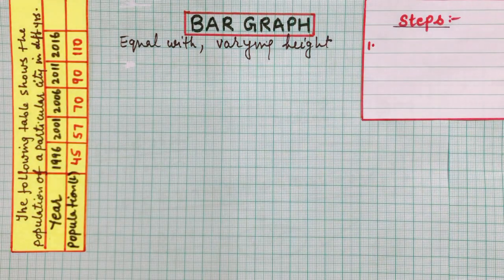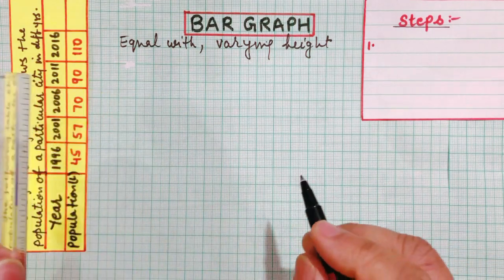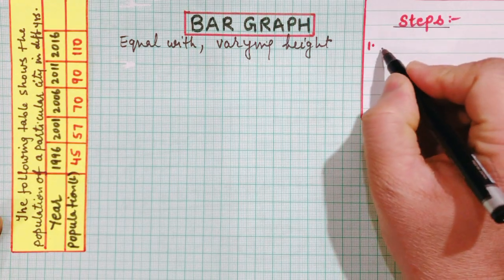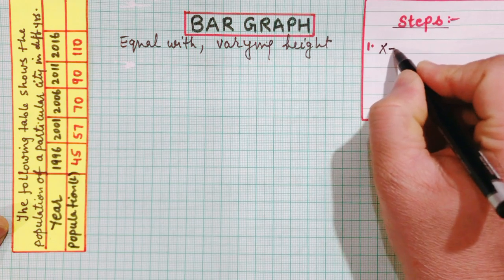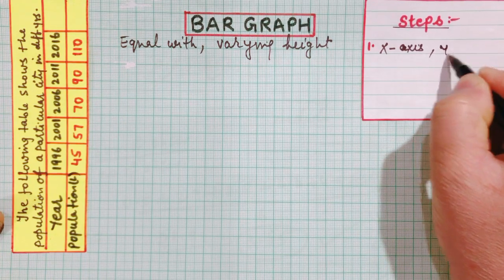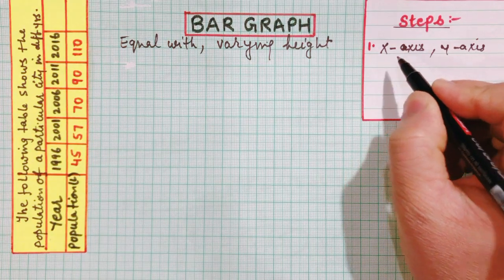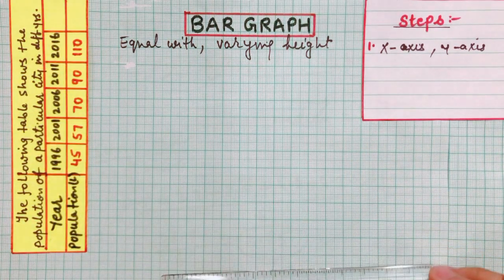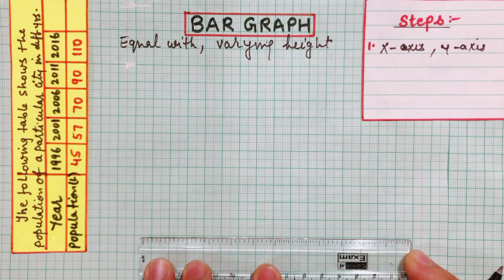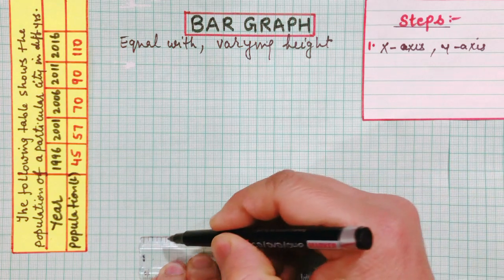It is very clear that when we draw the bar graph, each bar — that is, each rectangle — should have equal width. The first step is to draw the x-axis and y-axis. The x-axis is your horizontal line. You shall be using a sharpened pencil. This is my x-axis.